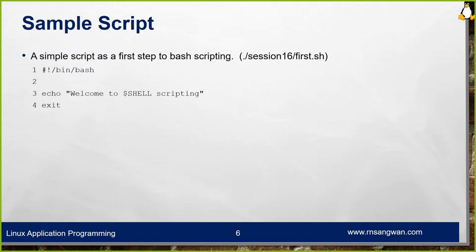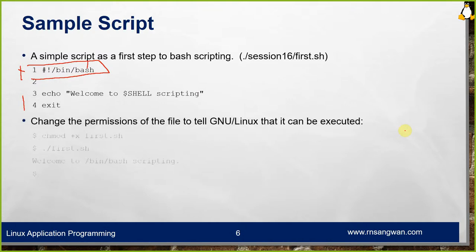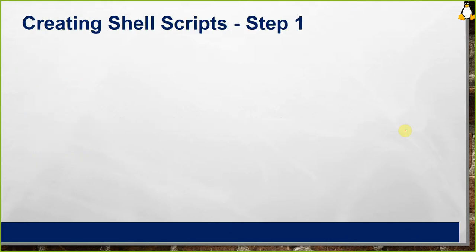The first line of a shell script is called the shebang or shbang — written as #! — which tells which shell will be used to parse and execute the commands in this file. For example, #!/bin/bash means bash will be used. The third line displays a welcome message; we can interpolate variables inside double quotes and they will be substituted by their values. You need to change the permission to make the script executable using chmod +x first.sh, then execute it with ./first.sh.